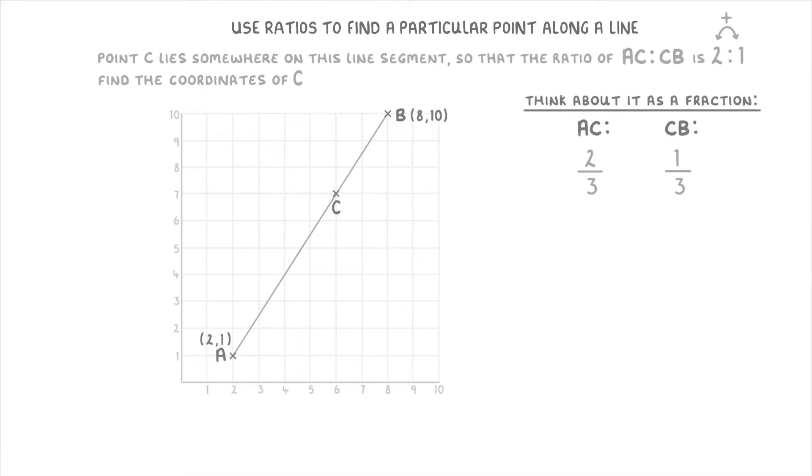The first thing to do is to think about how long the whole line is, in terms of the x and y axes. For example, the x values change from 2 at A to 8 at B. So that's a change of 6. While the y values change from 1 at A to 10 at B. So a change of 9 in the y direction.